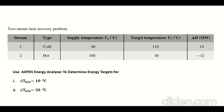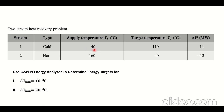In this introductory video tutorial of the S1 Energy Analyzer, we will simulate a simple two-stream problem. We have a cold stream available at 40°C, and we want to get the temperature to 110°C, which requires 14 megawatts. We have a hot stream with a supply temperature of 160°C, and we want to achieve a target of 40°C. To achieve this target, 12 megawatts need to be removed from the hot stream.